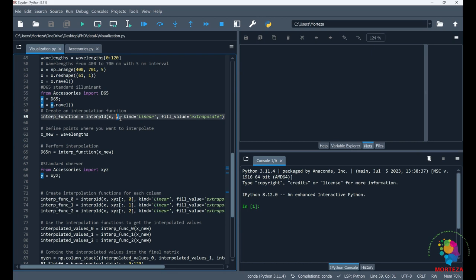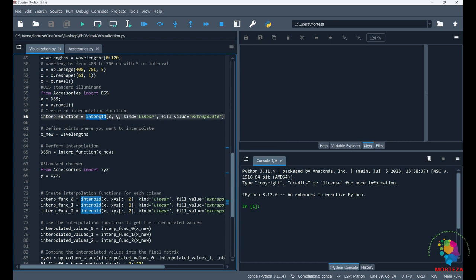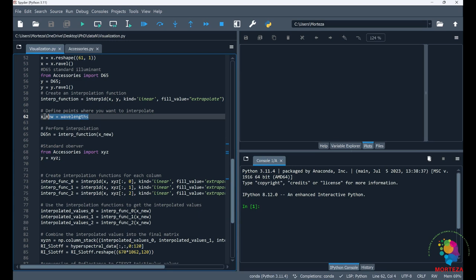So this is the standard illuminant data and x is the standard wavelengths as shown here. And I'm going to use the function interp1d and I'm going to interpolate the standard illuminant data for my wavelengths as shown here, x new, the wavelengths of my hyperspectral image.